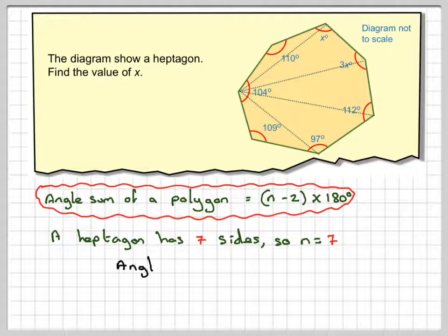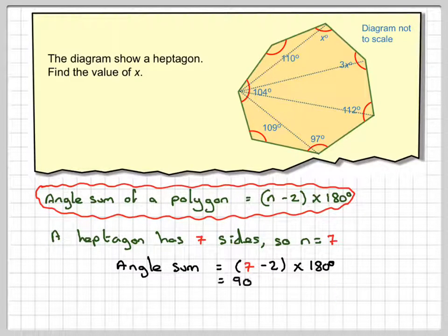So if we put 7 in here we're going to get 7 minus 2 times 180, so that's 5 times 180 which is 900 degrees. So all these angles in here, these interior angles, add up to 900 degrees.